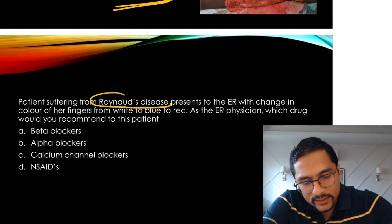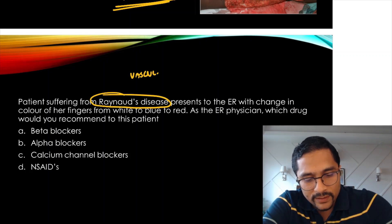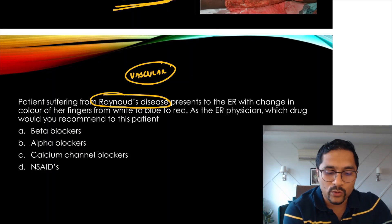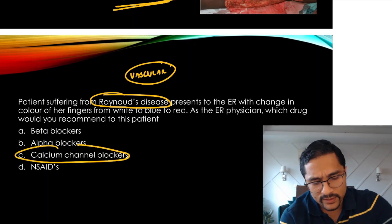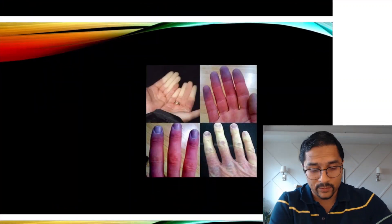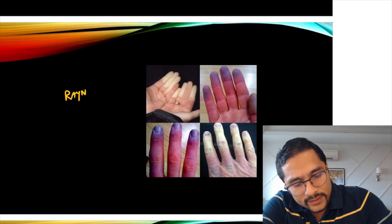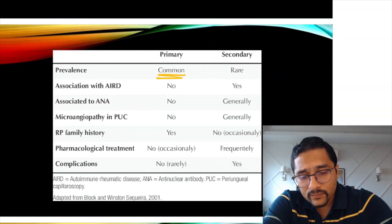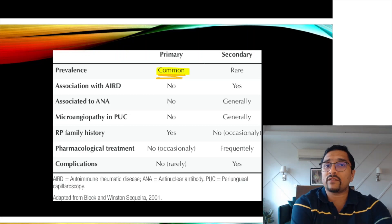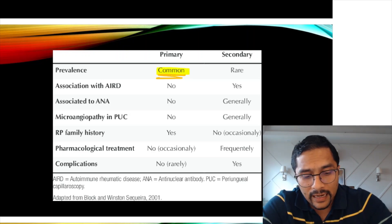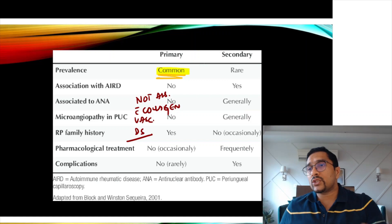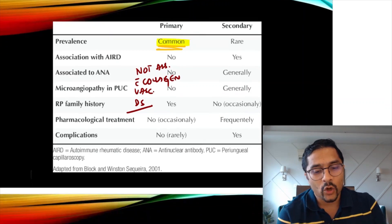A question from vascular surgery: a patient with Raynaud's disease presents with change in color of fingers from white to blue to red. Which drug to recommend? Calcium channel blockers. In Raynaud's, the sequence of color change is white, blue, red. Primary Raynaud's is more common than secondary Raynaud's and is not associated with collagen vascular diseases or autoimmune diseases.